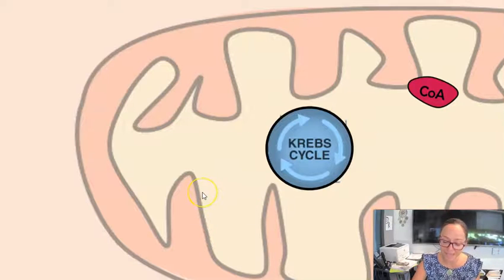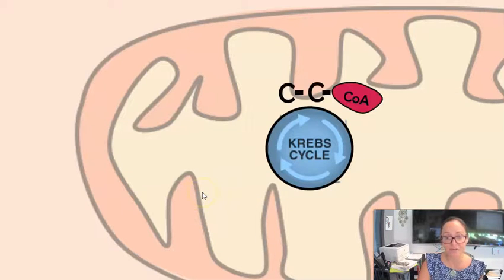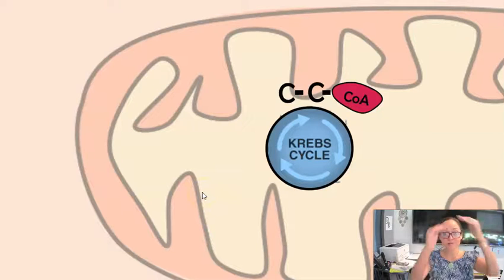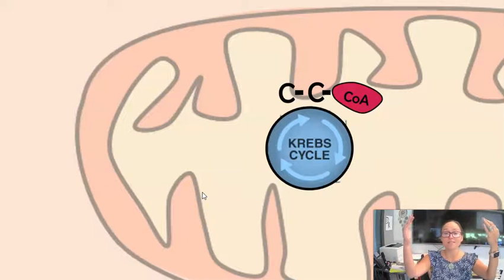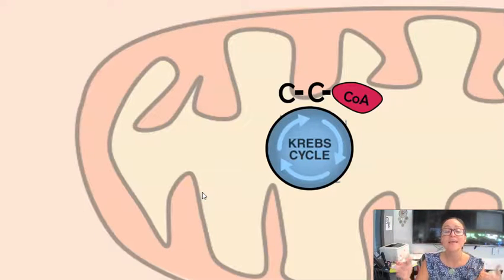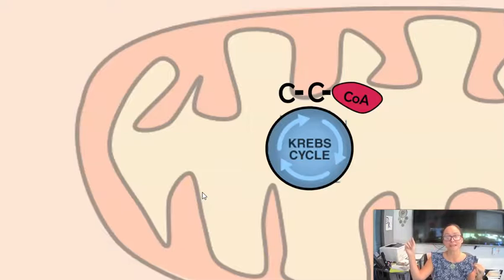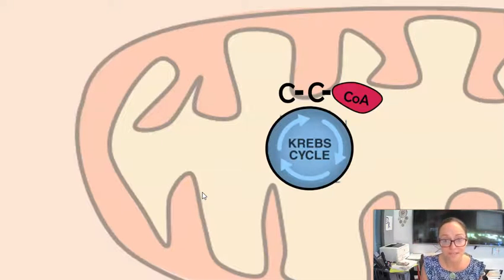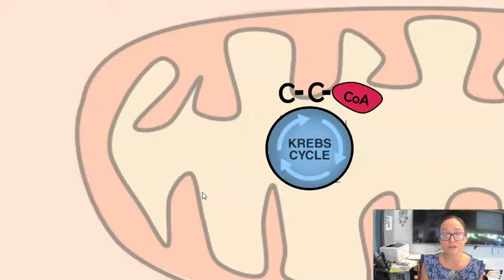When we had the acetyl, we had two carbons remaining. We had six carbons in glucose, and then in glycolysis we got two three-carbon pyruvates. Then we formed acetyl by releasing a carbon dioxide. So really, there's still potential energy in these bonds — there's still energy we can get from our food.